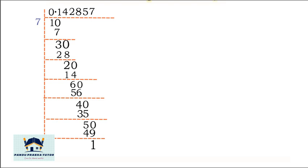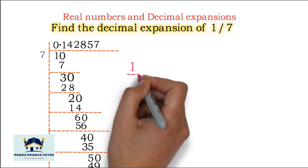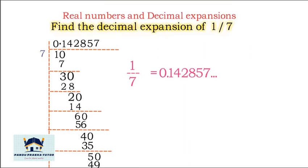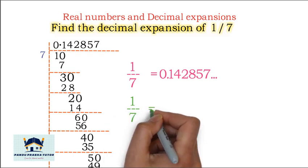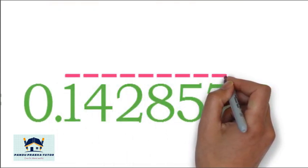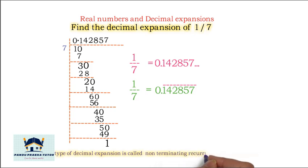50 minus 49 is 1 — again we get 1, so we are back to 1 divided by 7. This division continues and we will get 142857 again. This part is the recurring part. So 1/7 = 0.142857̄ — we write the bar on top of the recurring part. This is called Non-Terminating Recurring Decimal Expansion.